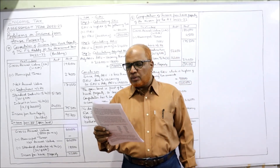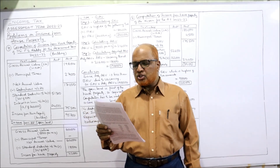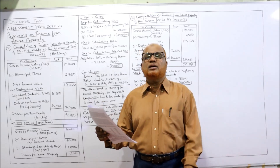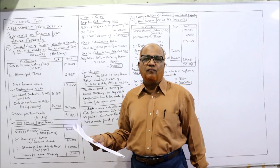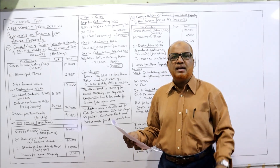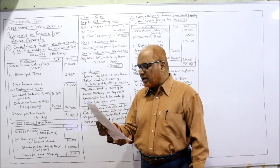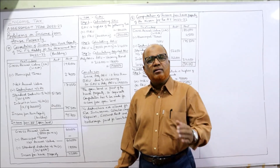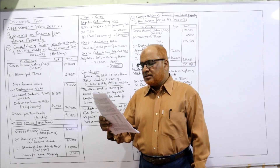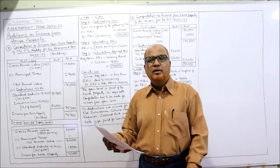The building is let out for residential purpose on a monthly rent of 18,000 — this is the actual rent. Municipal Rental Value (MRV) is 18,000. Rent for a similar building is 20,000 per month — this is the Fair Rental Value (FRV), the rental value of a similar building in the same locality. The open land is let out on a monthly rent of 5,000 to run a car parking business, so we have to calculate the rent from open land separately.